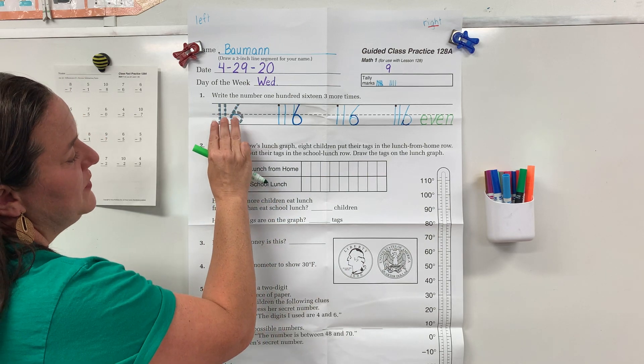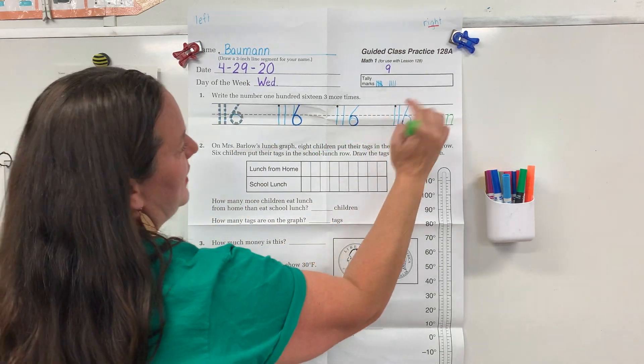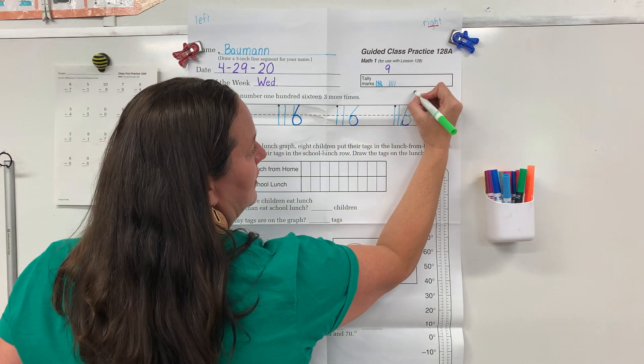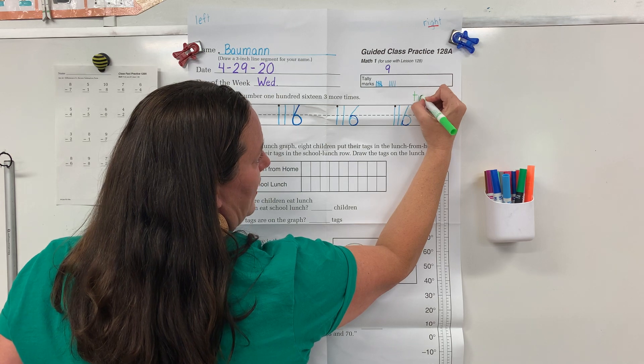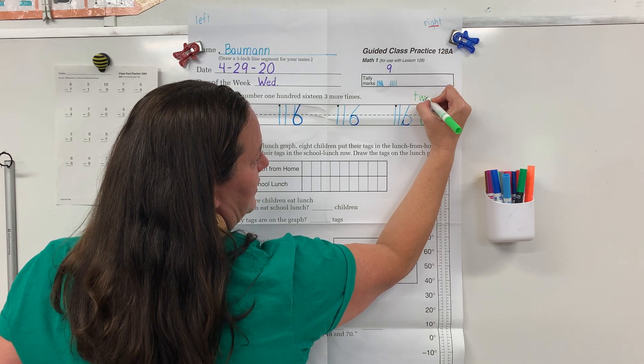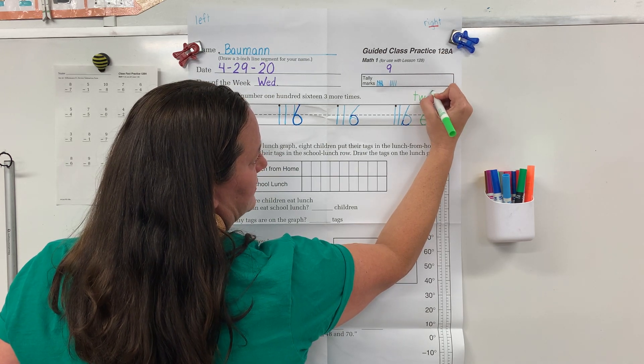Let's count by threes: 3, 6, 9, 12. So you should have written 12 in the number of digits.